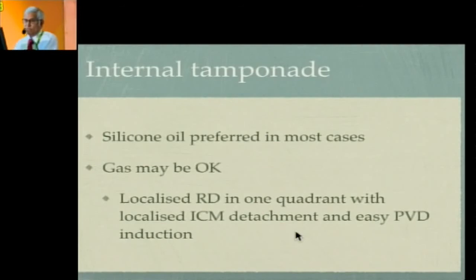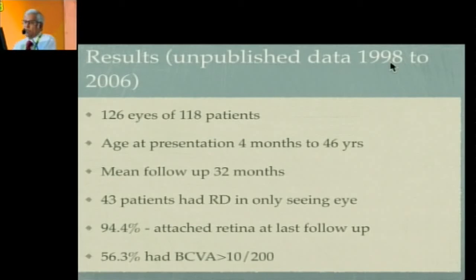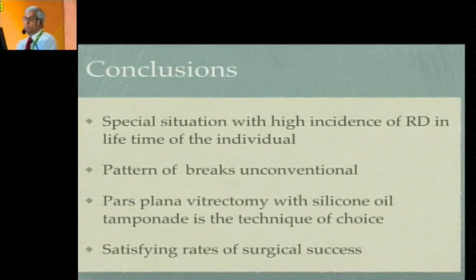Over time, we have accumulated enough experience to confirm that this approach is very successful in reattaching the retina in eyes that did not present with PVR and contracted retina. Our initial series showed about 81% success with 70% having functional vision. A later series accumulated between 1998 and 2006 showed almost 95% success as surgical techniques improved, with a large number of patients achieving good navigational vision. In conclusion, colobomas are a special situation with a high incidence of retinal detachment over the patient's lifetime. The pattern of breaks is unconventional and understanding the pathogenesis is essential. Pars plana vitrectomy with silicone oil gives a very good success rate with satisfying surgical and visual outcomes.